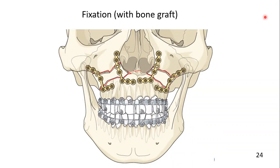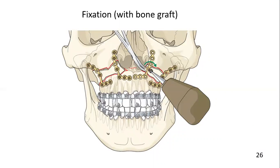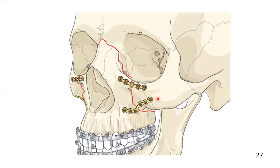Here you can see bone graft used to fill the defect, and the buttresses are restored by L-shaped plates on both sides. In such a case, the lateral buttresses are placed first, followed by the medial buttresses. The medial plates are applied on the medial nasomaxillary buttresses. Here you can also see a plate applied across the infraorbital rim, which is also a component of the horizontal buttress system.